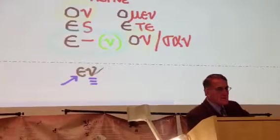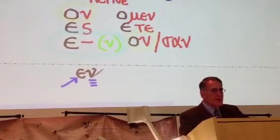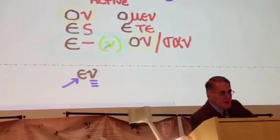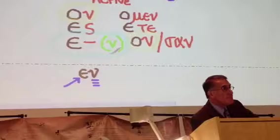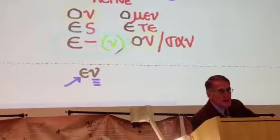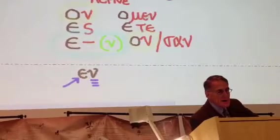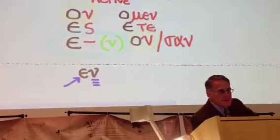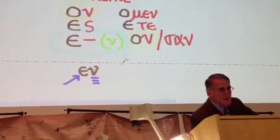So the endings that you'll work with: nu, sigma, nothing — possibly a movable nu there — and then the min, tet, and nu.